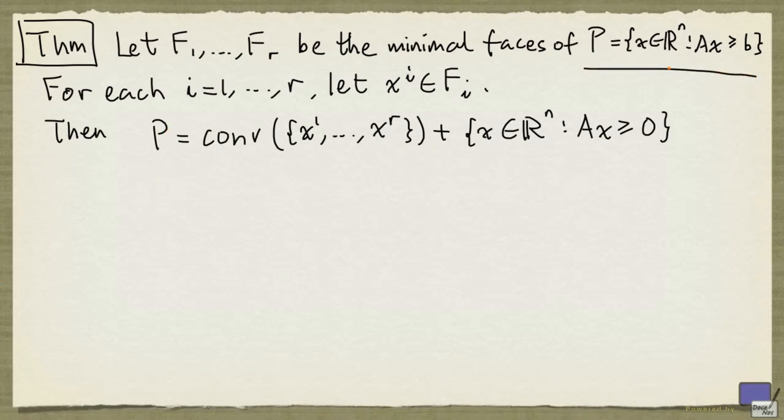Suppose that P is a polyhedron, and F1 up to FR are the minimal faces of the polyhedron P. For each minimal face Fi, we pick an arbitrary element x^i. Then P can be written as the convex hull of x^1 up to x^R plus a polyhedral cone.